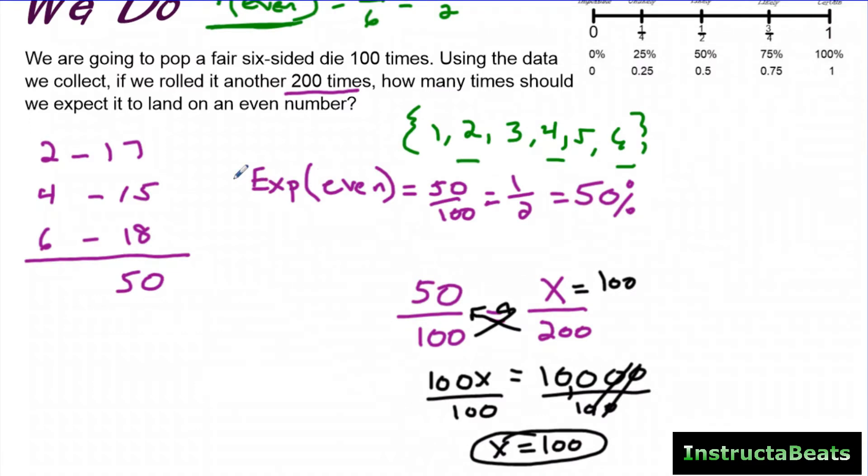This one worked out perfectly where the theoretical and the experimental probability were exactly the same. That's probably because we had a larger sample size. But you're going to do one of these in our challenge zone, and you're going to have to know how to set it up as a proportion, just like I did using your percent knowledge, and then solving for x.